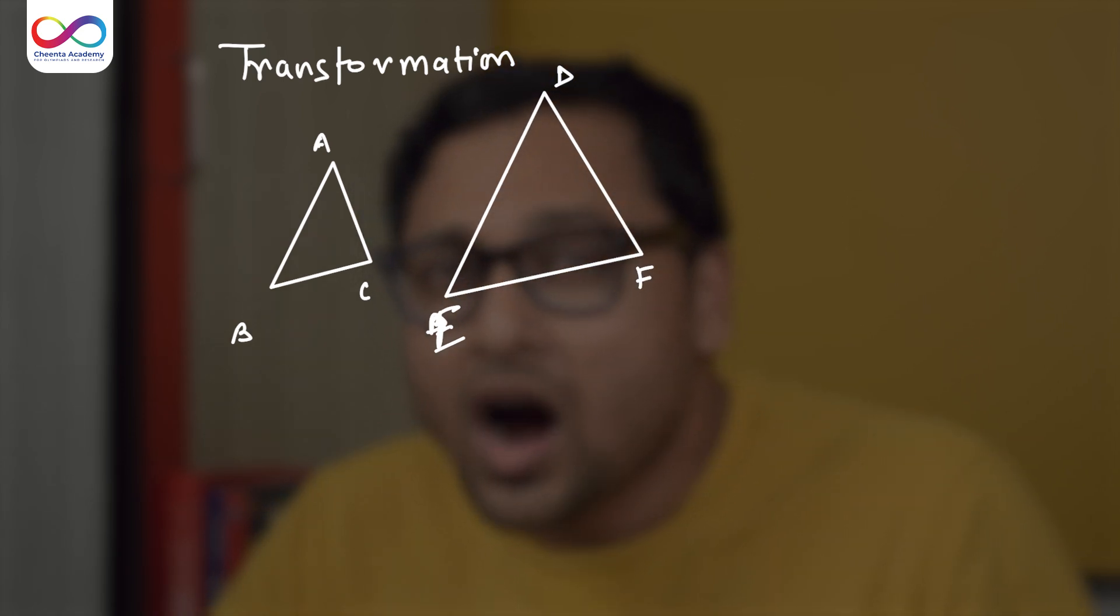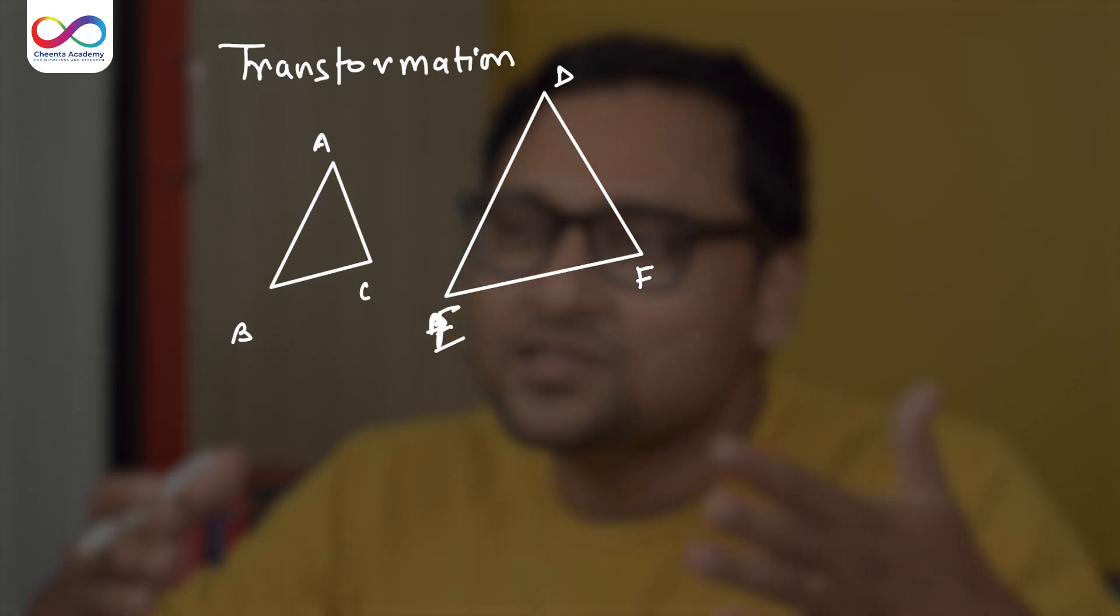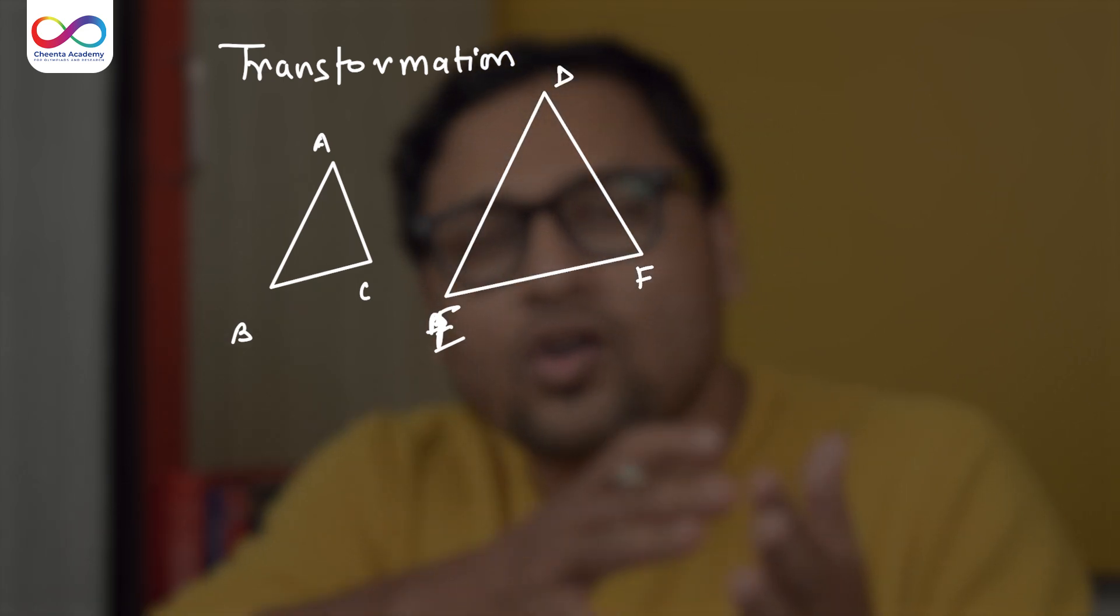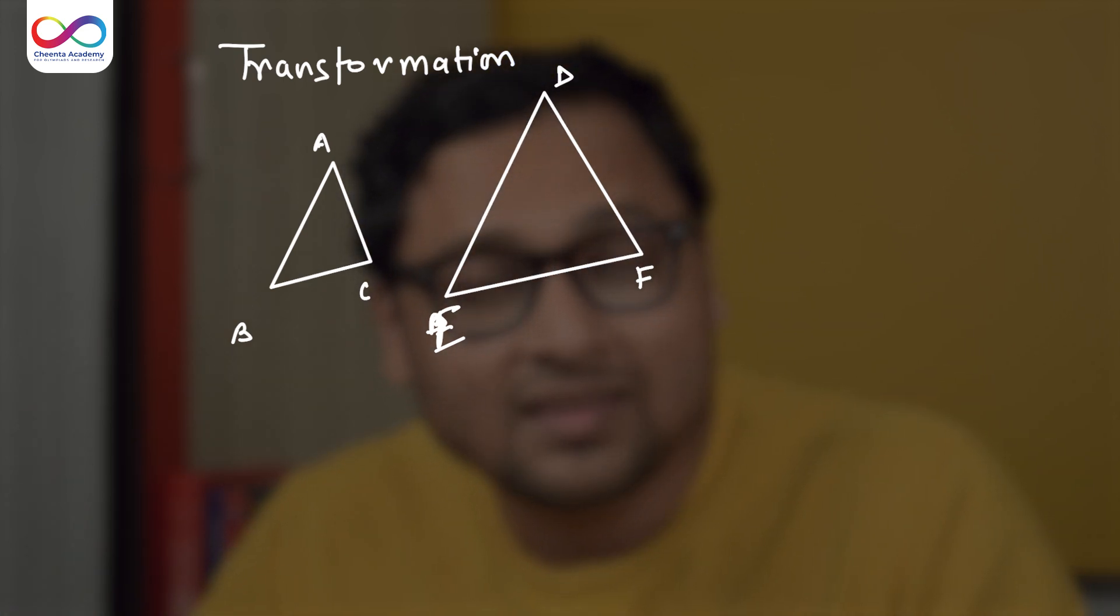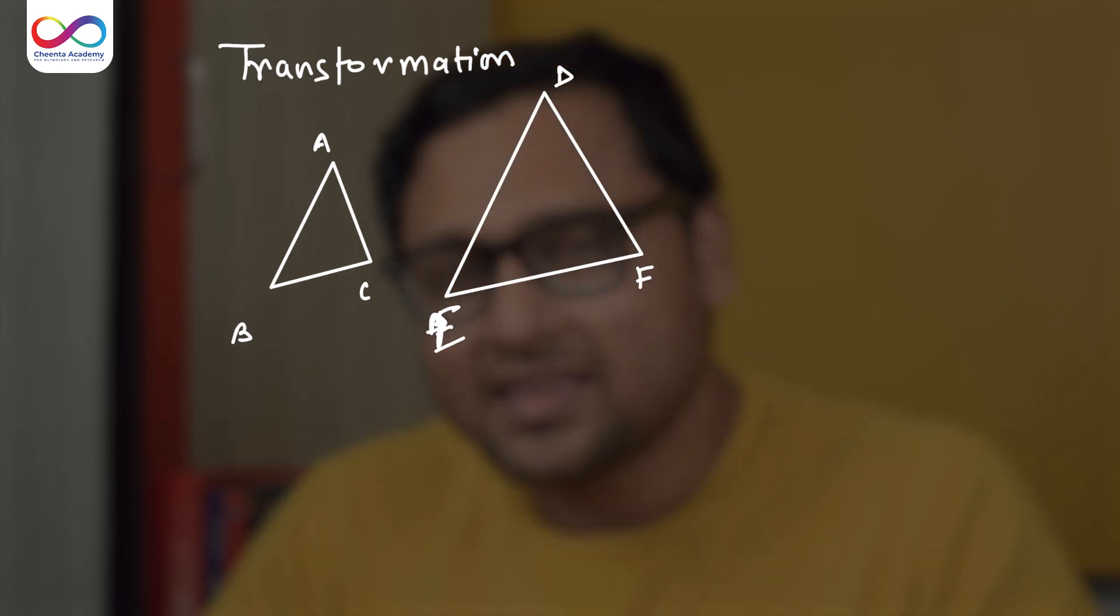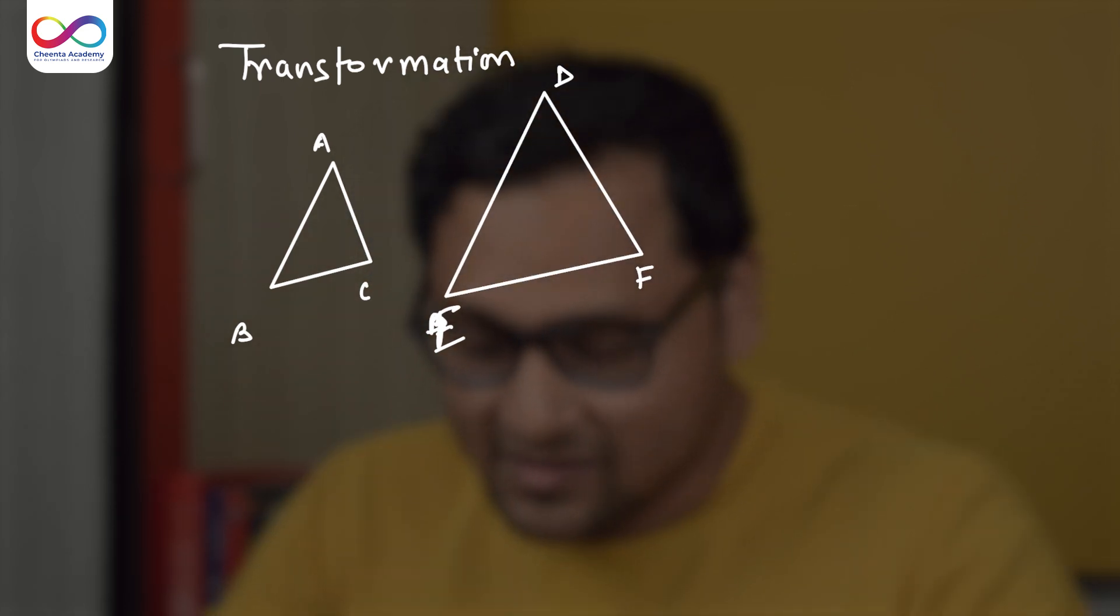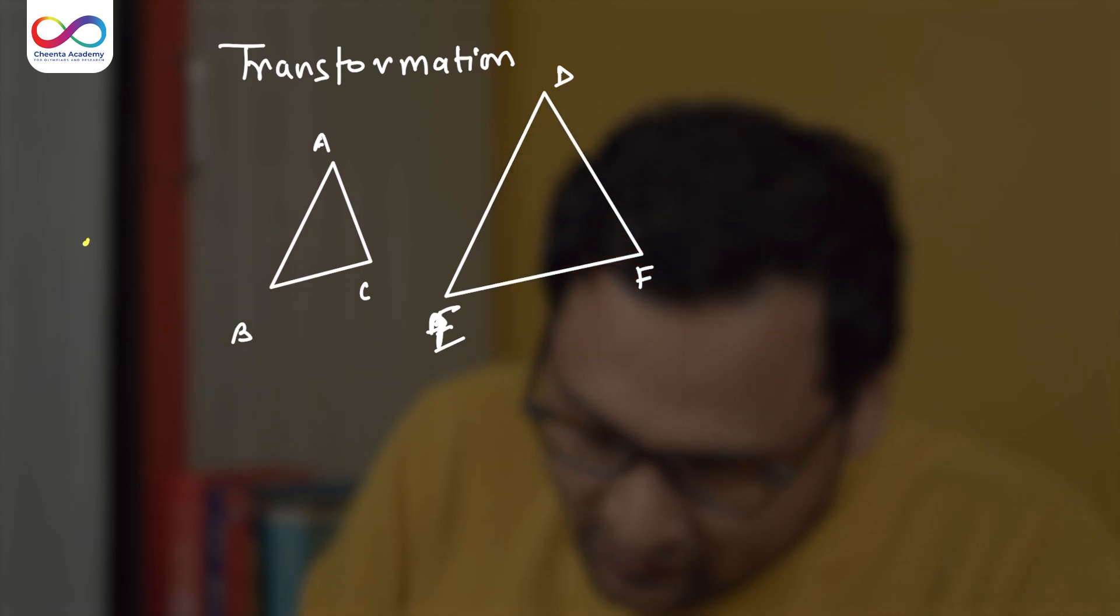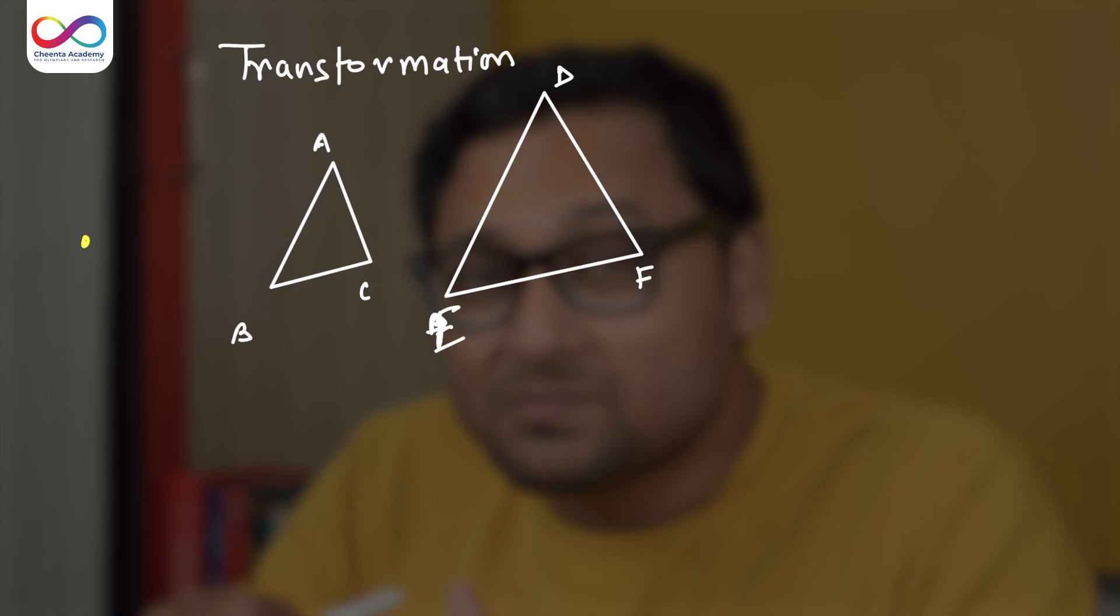If you are a synthetic geometer, then you'll just use the definition, all angles are equal, or all sides are proportional, stuff like that. If you are a Kleinian geometer, you'll say, okay, I have ABC, now I have blown it up. I have blown it up to DEF. So there is a point somewhere, maybe. It's not, maybe it's not always the case, but I'm just giving you a specific example.